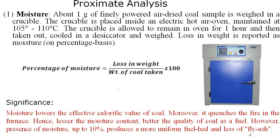Now, proximate analysis is a check done to find out the quality of coal based on preliminary parameters. The first parameter is moisture. We take one gram of powdered air-dried coal sample. Before heating, we record its weight. We place it in a crucible, which is placed inside a hot air oven equipped with a thermostat to maintain temperature. Dry heat is used to maintain dry conditions.